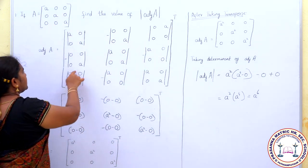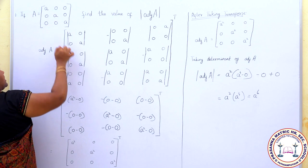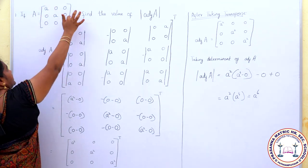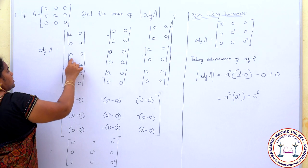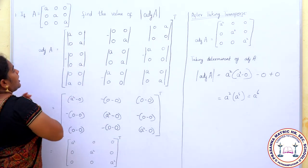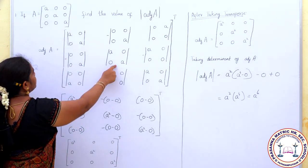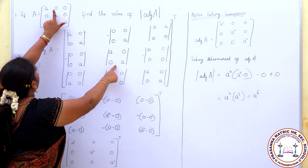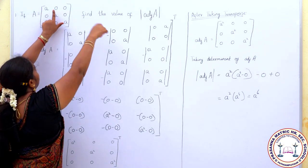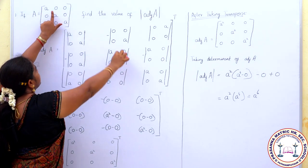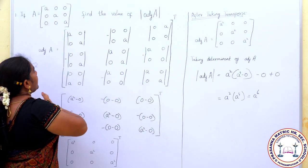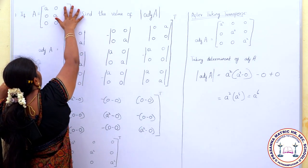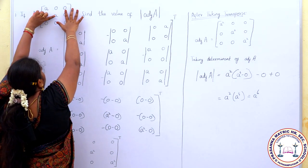Similarly, for the second row: for this element leave the first column and the second row and write the remaining elements. For the next cofactor, leave the second column and the second row and write the remaining elements. For this one, leave the third column and the second row and write the remaining elements.